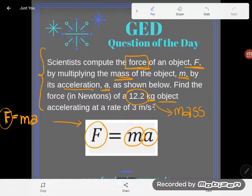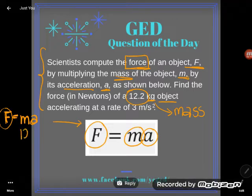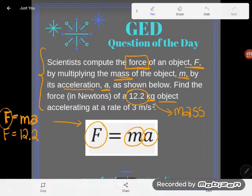So because 12.2 is a mass, I am going to plug it in under the letter M. I'm going to replace the M with 12.2 in the next line of my formula. This is called the substitution step. I'm substituting out letters for numbers. So I take out the M and I put in 12.2.